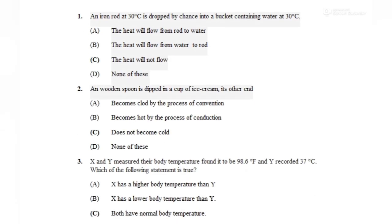Question number 1: An iron rod at 30 degree Celsius is dropped by chance into a bucket containing water at 30 degree Celsius. The options are: heat will flow from rod to water, heat will flow from water to rod, heat will not flow, or none of these.